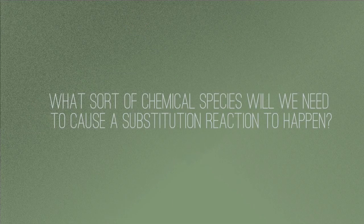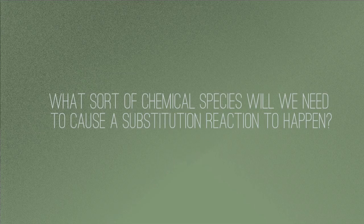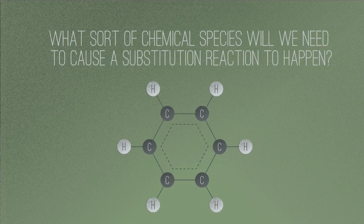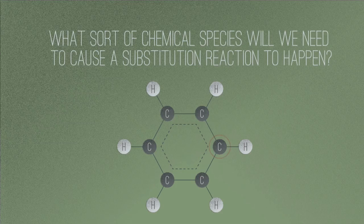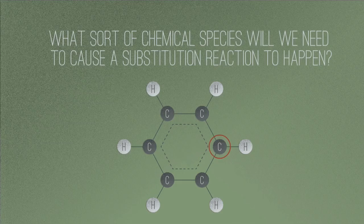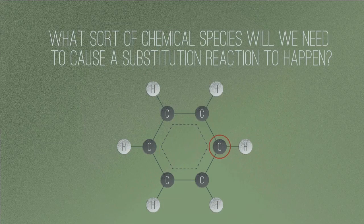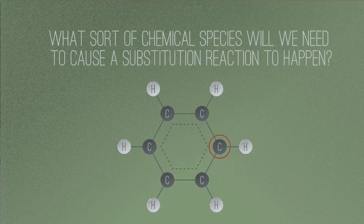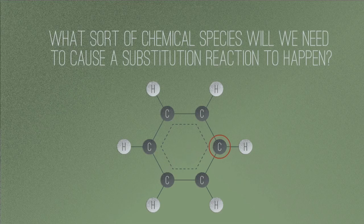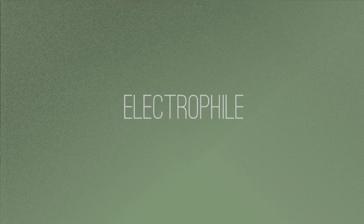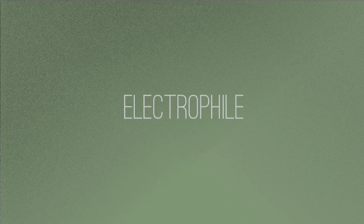What sort of chemical species will we need to cause a substitution reaction to happen? Remember, the atom in the benzene being attacked is one of the carbons, and these carbons have lots of electrons moving around them. Pause the video and have a think, then resume. The answer is, we will need an electrophile, something that will be attracted to all those electrons.